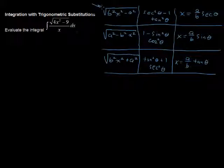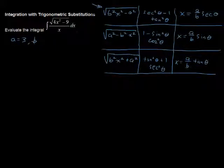We see the first form here. We see that a equals 3 because 3 squared is 9, and b is 2 because 2 squared is 4. So we could write that as 2 squared times x squared minus 3 squared.